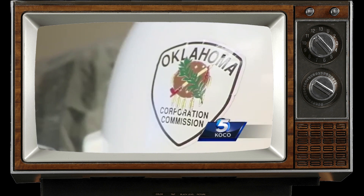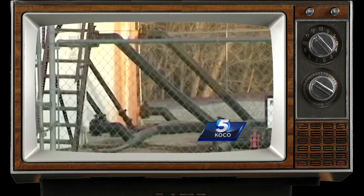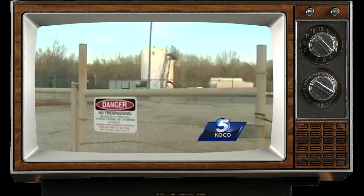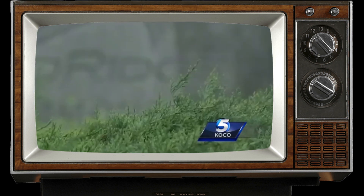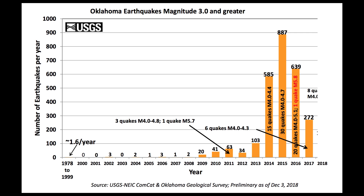They began requiring wells to record their disposal volume every week, decreased total wastewater injection volume by 80,000 barrels a day, and completely shut down 700 wells. As a result, induced seismicity rates quickly decreased, and in 2018 only 154 magnitude 3 earthquakes were recorded.